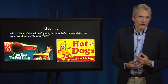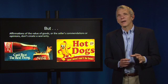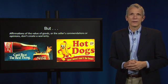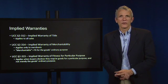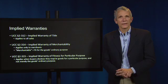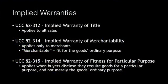Luckily, comment 8 to the section says that with regard to false statements of value, "the possibility is left open that a remedy may be provided by the law relating to fraud or misrepresentation." The UCC also establishes in three separate provisions three important implied or default warranties. The first, Section 2-312, is the implied warranty of title, which applies to all sales. The second, Section 2-314, is the implied warranty of merchantability, which applies only to merchants. This provision states that in a contract for the sale of goods, the seller, as a merchant, impliedly warrants those goods will be merchantable with respect to goods of that kind.